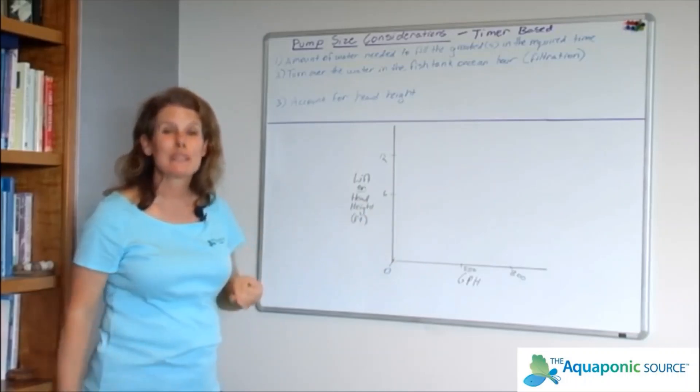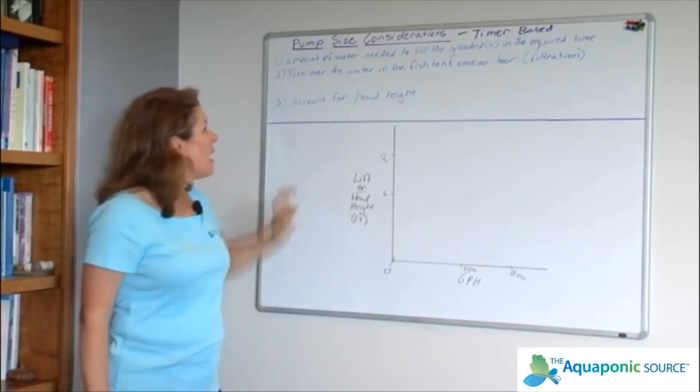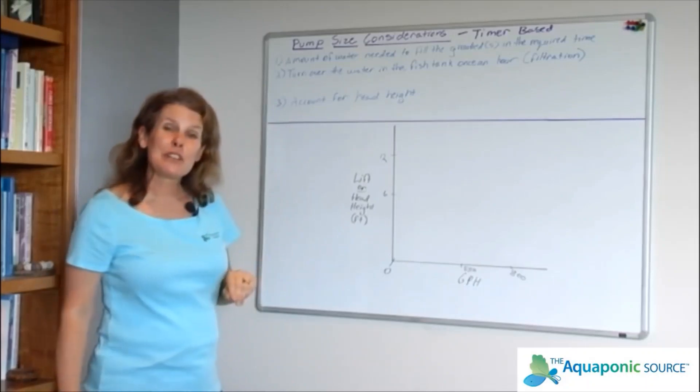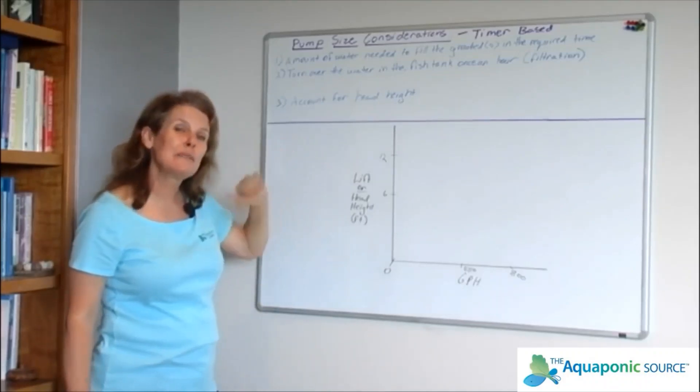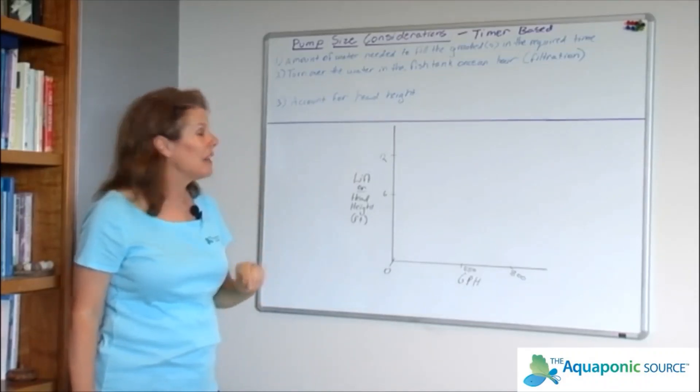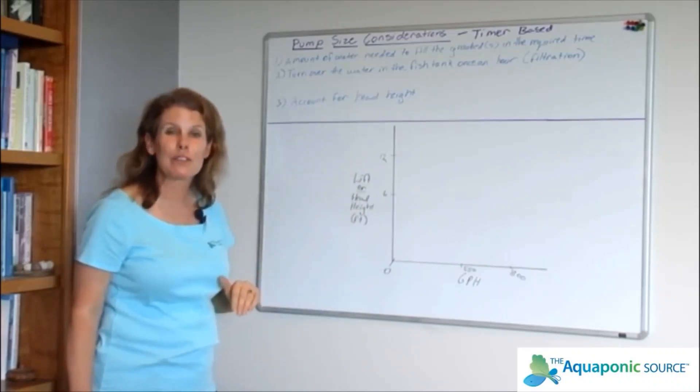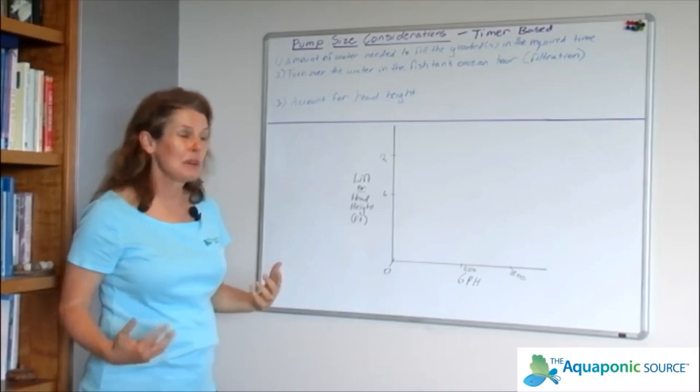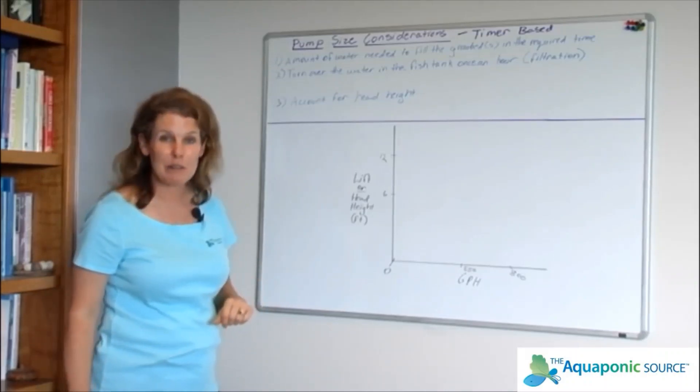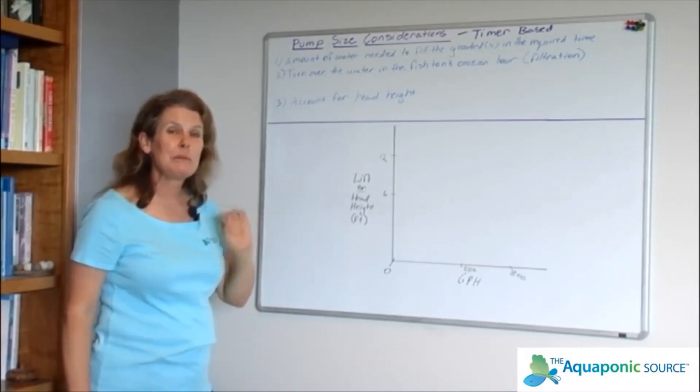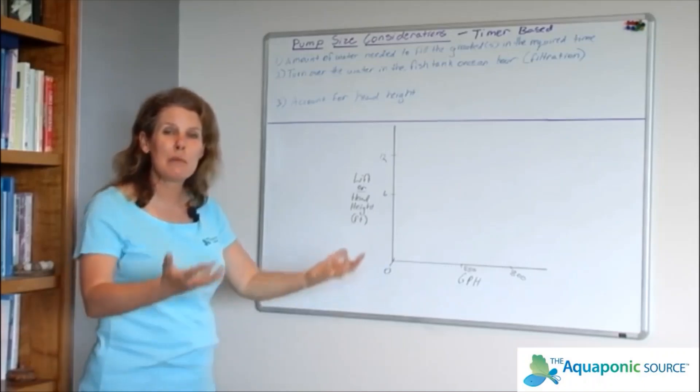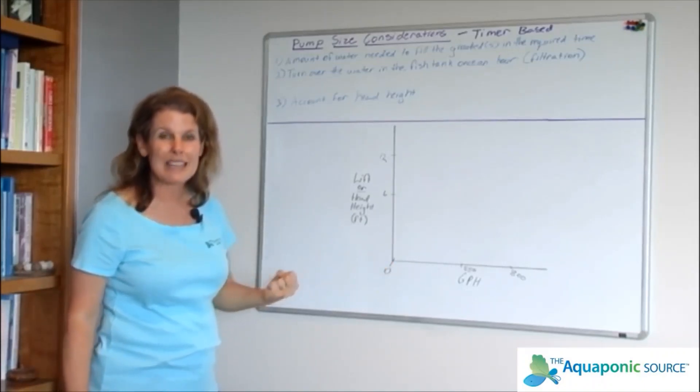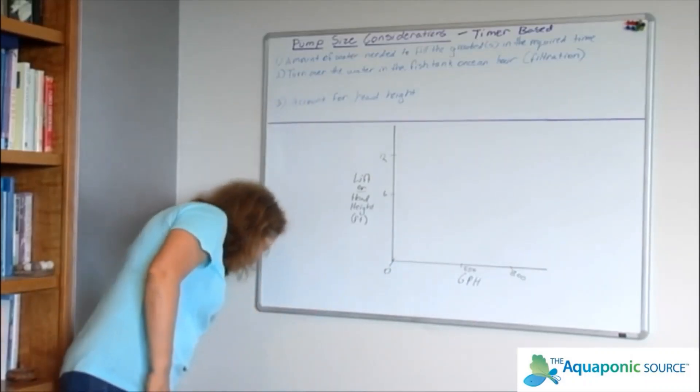The third consideration is something called head height, and this has to do with how far you're trying to lift that water against gravity to move the amount of water that you need to move. For example, if I have an 800 gallon per hour pump, that's only going to be moving 800 gallons at no lift. As soon as I've got to push that up against gravity, I'm going to start seeing a degradation of performance.